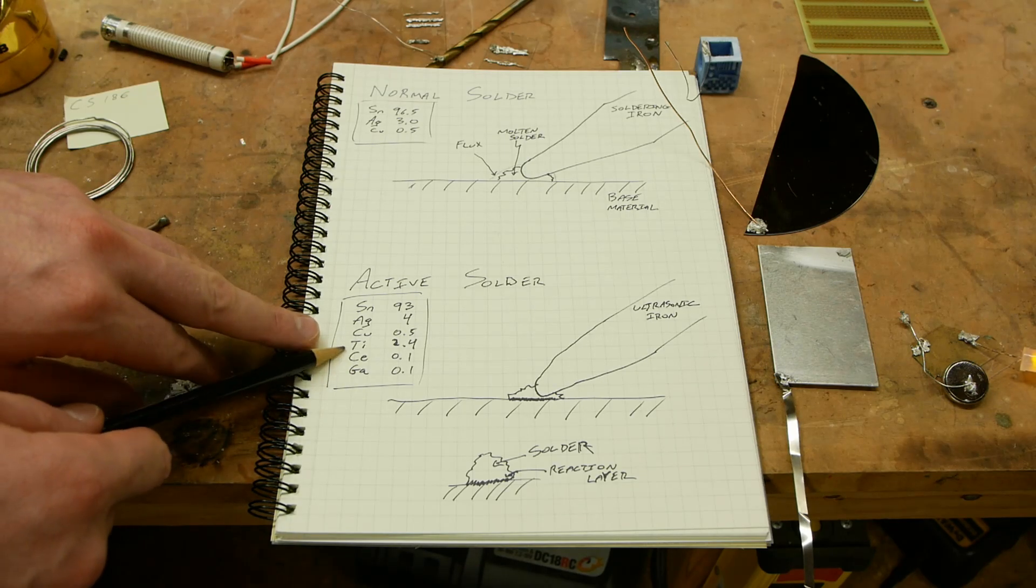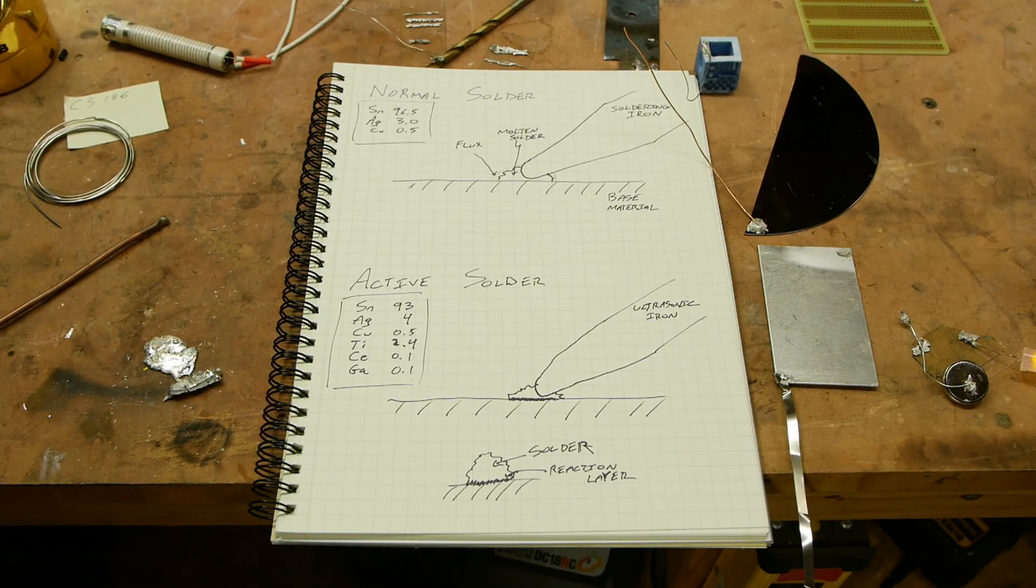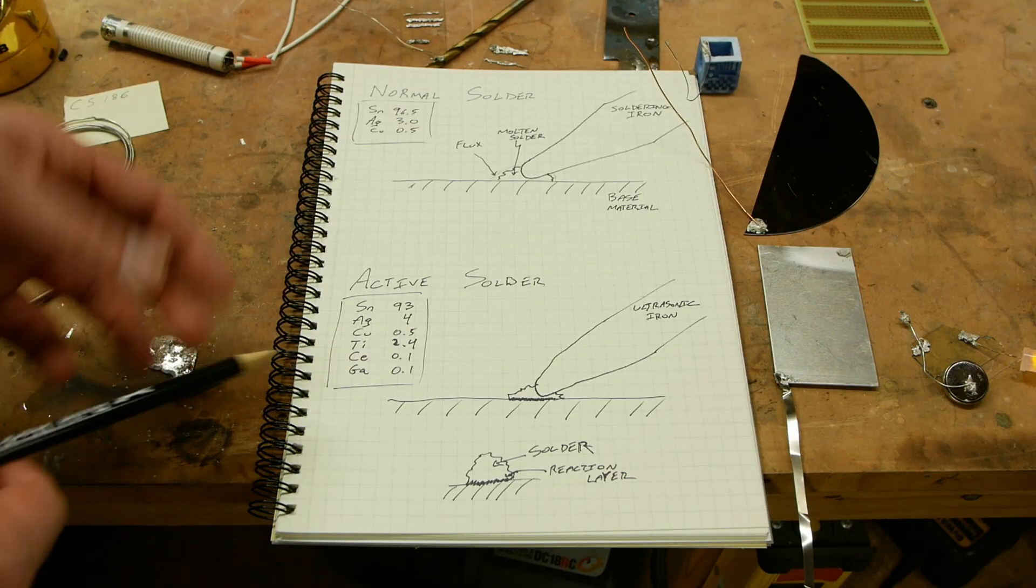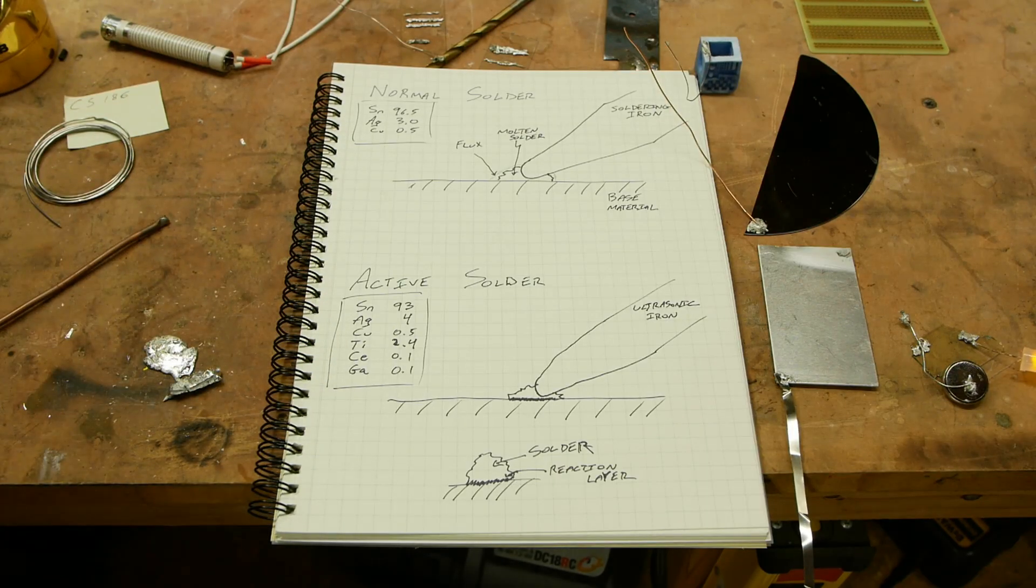So if we put a little bit of that in the solder, then the solder is able to stick to things that aren't metals because it in part will create these titanium oxide type structures that can bond to non-metals.